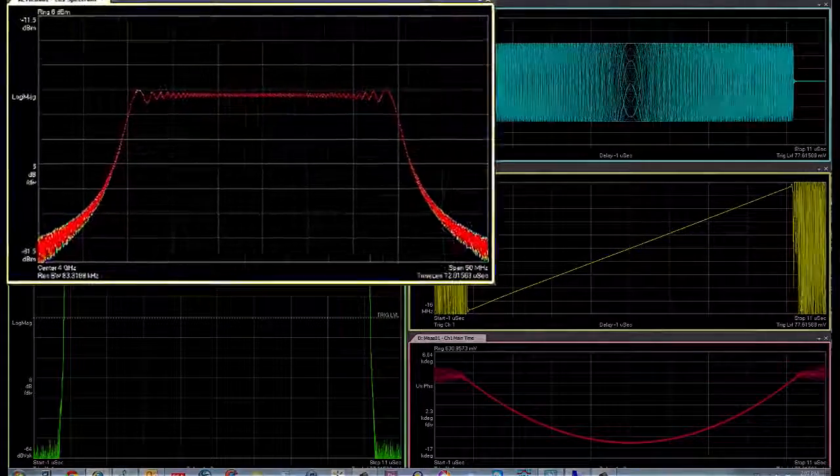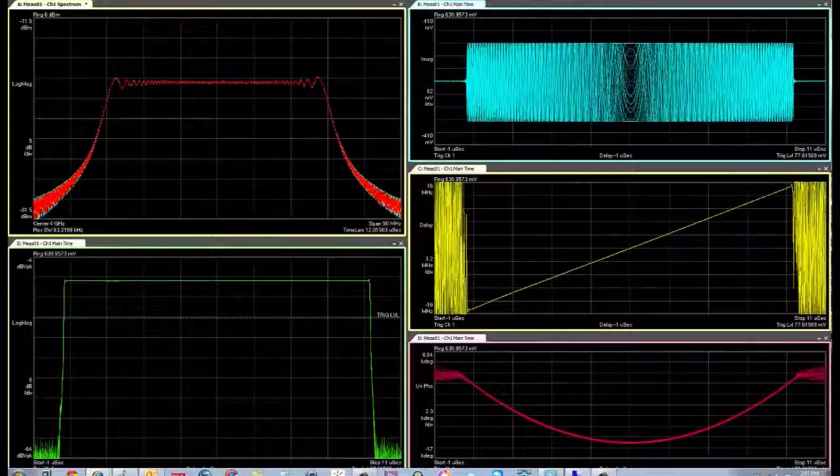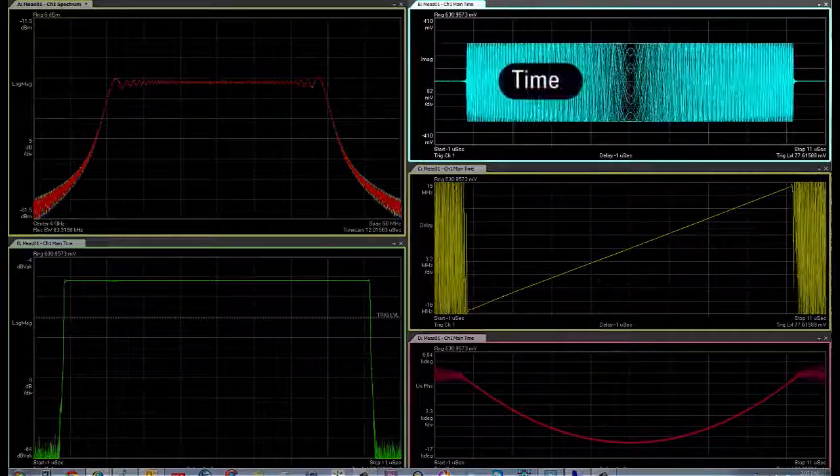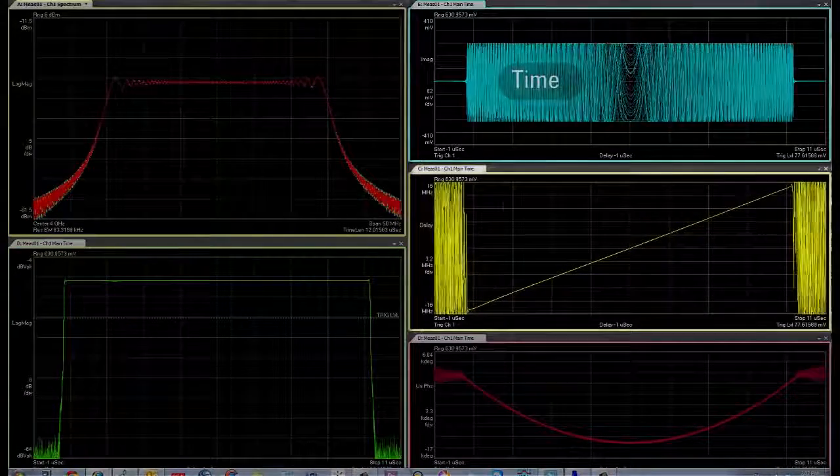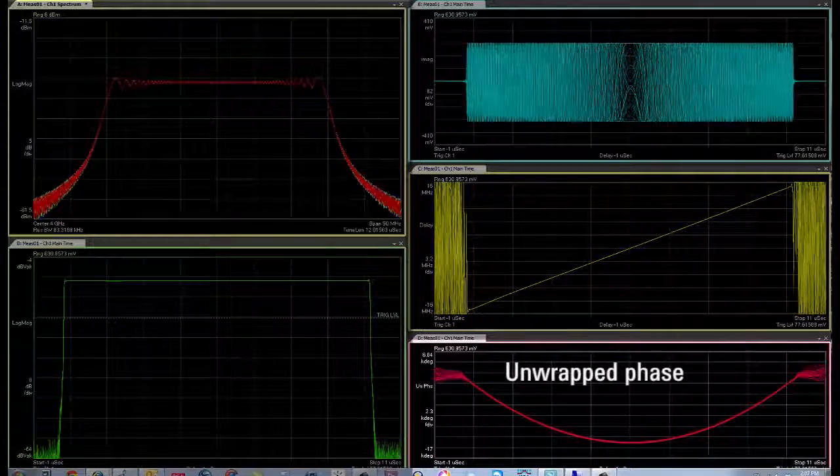The log magnitude showing the frequency domain from minus 15 MHz to plus 15 MHz. The screens on your right are showing it in different views. So on the top screen, we're showing versus time. In the middle, we're showing group delay, so you see the nice linear chirp. And on the bottom screen, you're seeing unwrap phase.